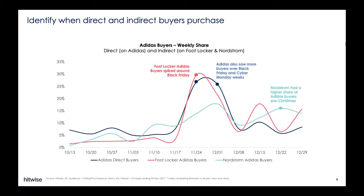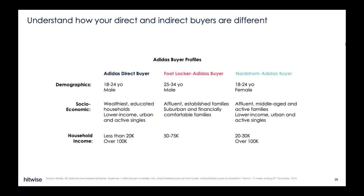Tracking the sales trends for direct versus indirect buyers allows us to see when peaks occur for each group's buying cycle. Based on the results, Adidas can time their promotions with Nordstrom closer to Christmas and for Foot Locker before Black Friday. We can also determine if there are demographic differences in these audiences. Although there's a 50% overlap in Foot Locker Adidas buyers that also visit the Adidas site, demographic data shows vast differences between these groups. Understanding the unique behaviors and attributes of your direct and indirect buyers can help a brand create strategies that will engage each group according to their interests.